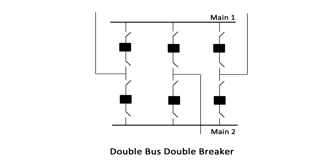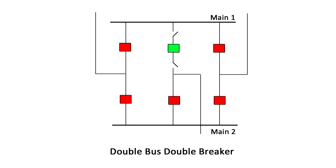Number 3. Double bus, double breaker. The double bus, double breaker configuration utilizes two buses and two breakers per circuit. Both buses are normally energized and any circuit can be removed for maintenance without an outage on the corresponding circuit.